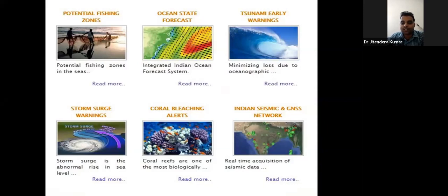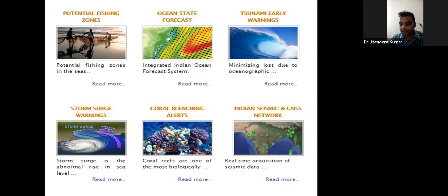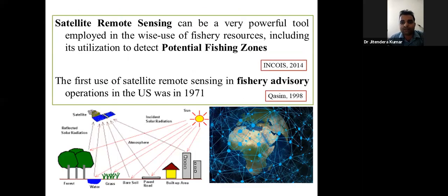There are many major applications in fisheries where remote sensing plays a very important role — such as potential fishing zones (PFZ), ocean state forecast (OSF), and coral bleaching monitoring, among many more. If I go into each one, it could take a full day to explain. I'll focus on two excellent applications in fisheries: PFZ and OSF. Earlier, remote sensing was used only for land and forest area identification, but from 1971 onwards the use of remote sensing in fishery advisory began.